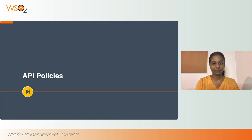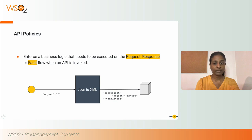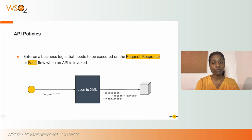API Policies generally enforce some business logic that needs to be executed on the request, response, or fault flow when an API is invoked. So if you want to incorporate a behavioral modification of the request before sending it to the backend, or a modification of the response before it is sent back to the client, or a modification when a fault occurs, you can add API policies to an API from the API Publisher portal.